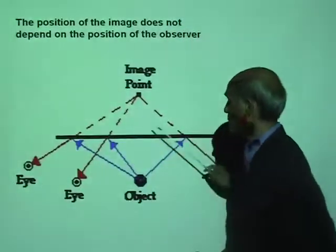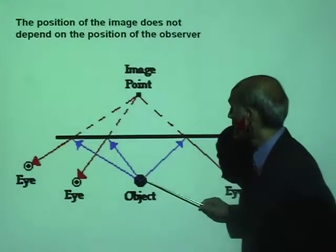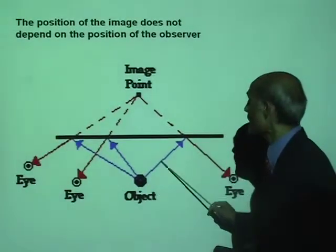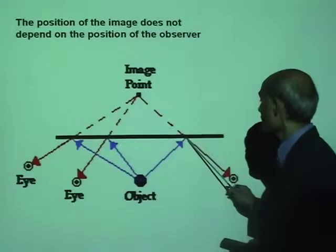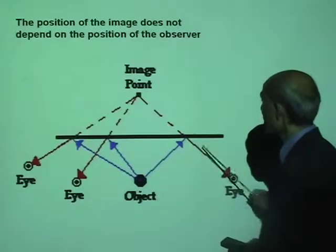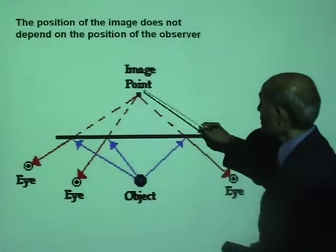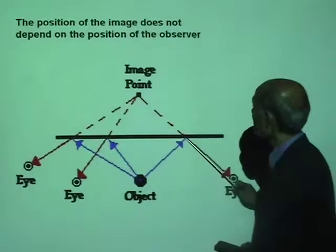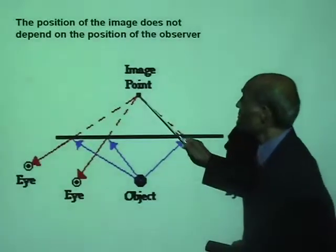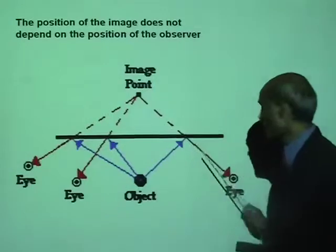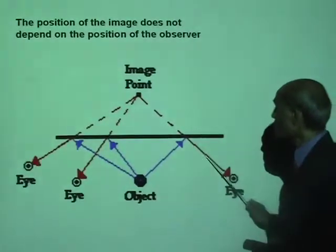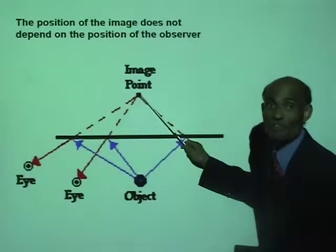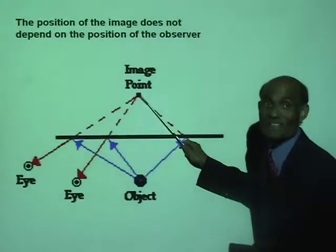Look at this diagram. You have the object here. You can take any ray falling on the mirror — it gets reflected, and the image is going to be formed where this reflected ray appears to come from. When you look from here, this reflected ray appears to come from this point, and that is the image.